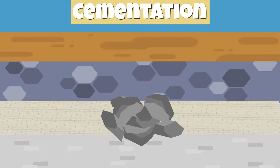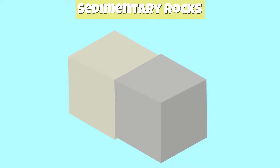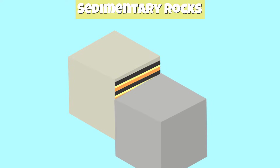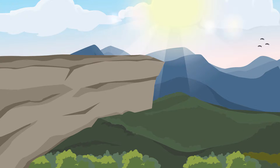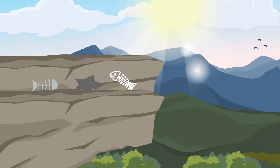Cementation is the bonding or sticking together of these sediments and the formation of new rocks. When a body of water dries up or if the earth's plates shift, it can expose the sedimentary rock below the surface. Weathering and erosion can further expose and break up sedimentary rock layers and can even reveal hidden fossils.